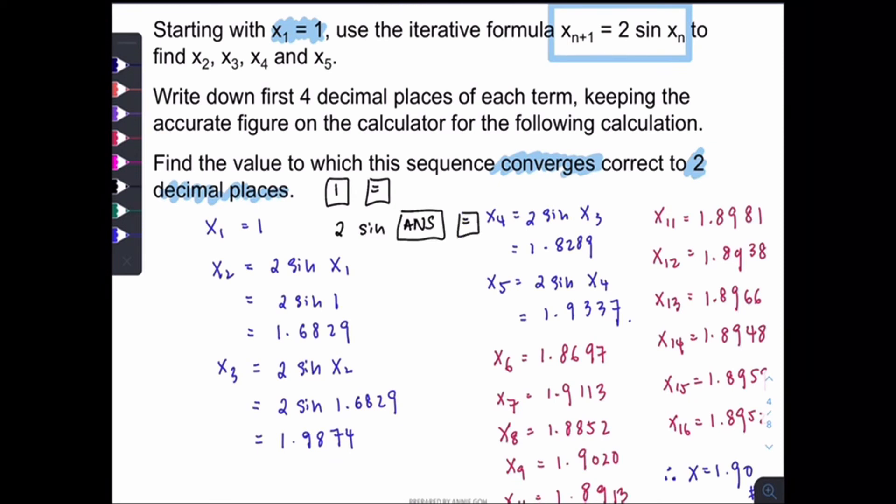Which is 2 sine and the x you replace with the answer button. And then you press the equal sign. So then the calculator will automatically sub the 1 into the answer here to get the x2. So in order to get the x3, isn't it you're supposed to sub in this answer into here? And the x, we have already changed it into answer, which means now when we press the equal sign again, then the calculator will automatically sub the x2 answer into this part to get the x3.